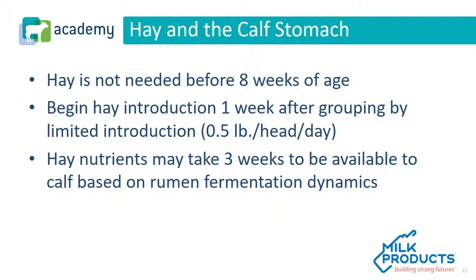Hay does not need to be fed to the calf before 8 weeks of age. When hay is introduced one week after grouping, it should be fed at less than half a pound per head per day. Hay does have nutrients in it, but they take 3 weeks to be available to the calf based on rumen fermentation dynamics.